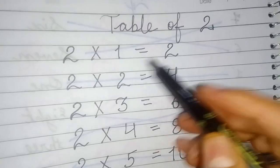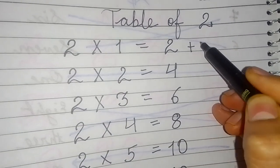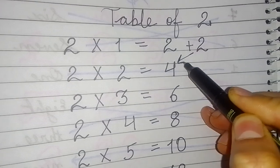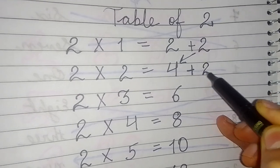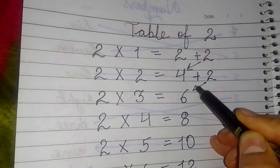Now what you have to do is add 2 to 2, so you will get 4. Then you will add 2 to 4 and you will get 6. Like this,